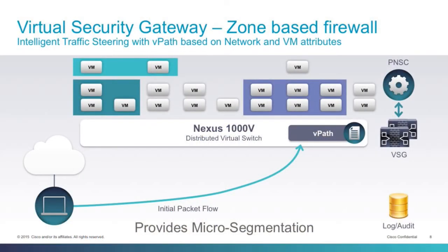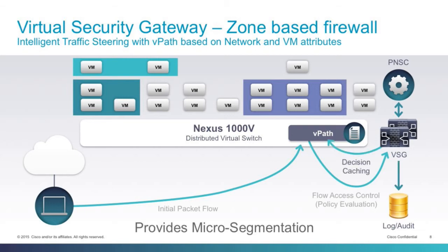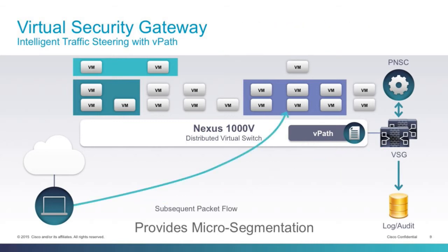When a flow hits the Nexus 1000V Ethernet module, we use something called vPath — a service-chaining technology — to redirect the packet to the Virtual Security Gateway. The gateway decides what rules to apply to the packet and returns the decision with a cache entry. Once we get the packet back, we cache the result in the Nexus 1000V Ethernet module itself. From that point on, further packets are sent directly through without going to the VSG. This provides a stateful firewall securing east-west traffic based on both network and virtual machine attributes. It's included in the solution at no extra cost, as part of the Nexus 1000V package.